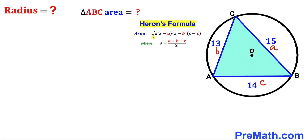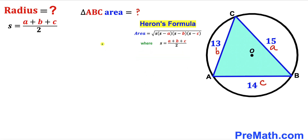The area formula is: Area = √(s × (s−a) × (s−b) × (s−c)), where s = (a + b + c) / 2. Here s is called the semi-perimeter. Now we are going to calculate the value of s. Our a value is 15, b value is 13, and c value is 14.